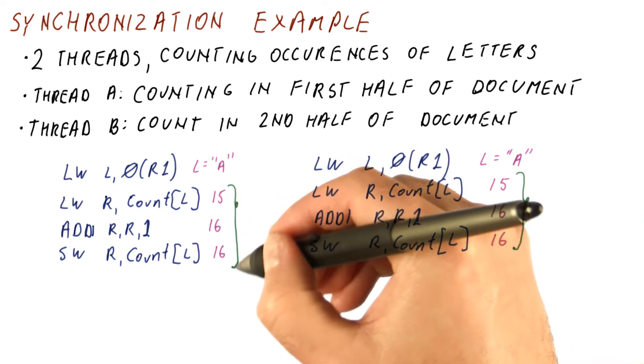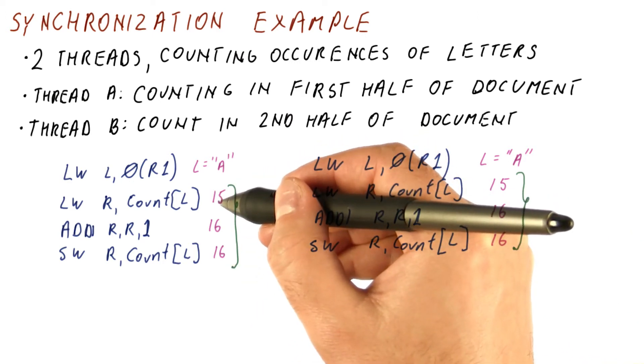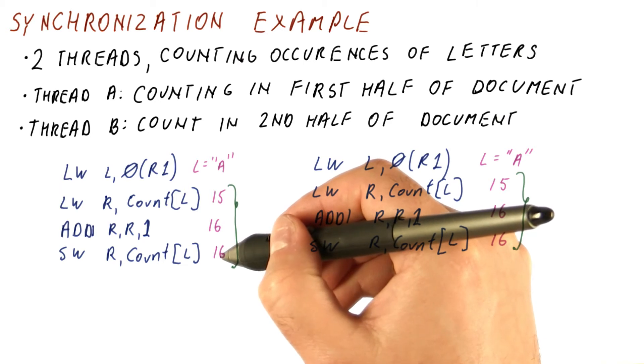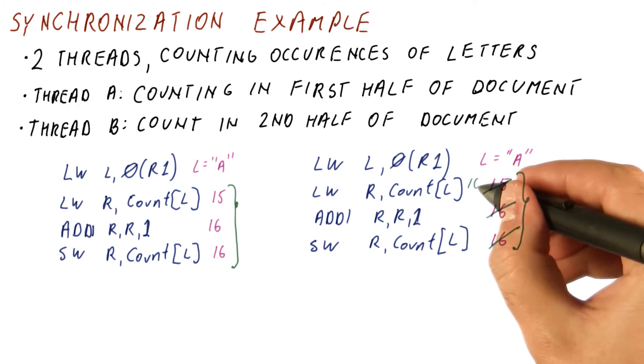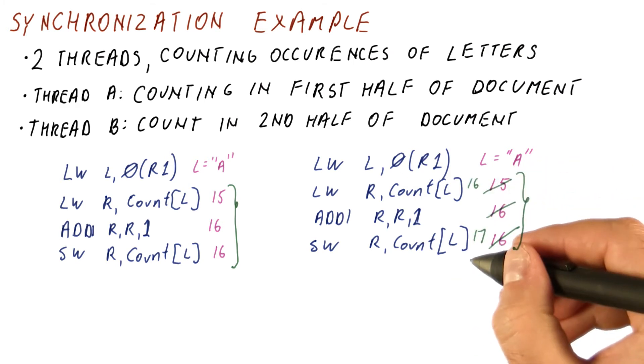If, for example, this happens first, we load, we get 15, increment, store 16. Now when we load this here, cache coherence ensures that we load 16, and we end up with 17 here, which is a correct result.